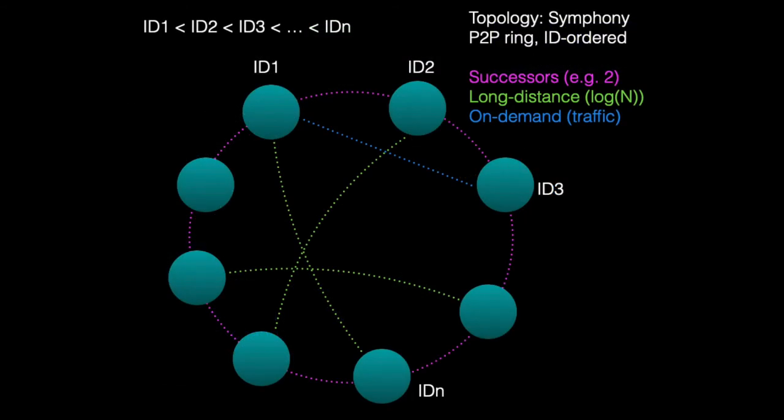Once nodes form a topology, it follows a structured P2P approach based on the Symphony protocol. Nodes have unique identifiers ordered in successive IDs in a way that makes the network routable.